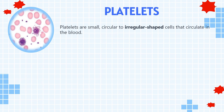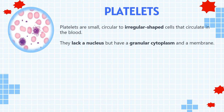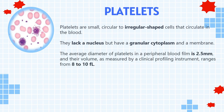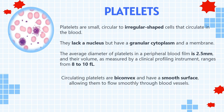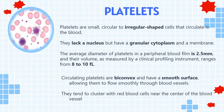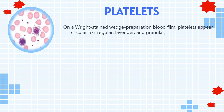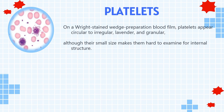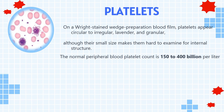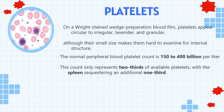Platelets are small, circular to irregular shaped cells that circulate in the blood. They lack a nucleus but have a granular cytoplasm and a membrane. The average diameter of platelets in a peripheral blood film is 2.5 mm, and their volume, as measured by a clinical profiling instrument, ranges from 8 to 10 femtoliter. Circulating platelets are biconvex and have a smooth surface, allowing them to flow smoothly through blood vessels; they tend to cluster with red blood cells near the center of the blood vessel. The normal peripheral blood platelet count is 150 to 400 billion per liter, with the spleen sequestering an additional one-third.